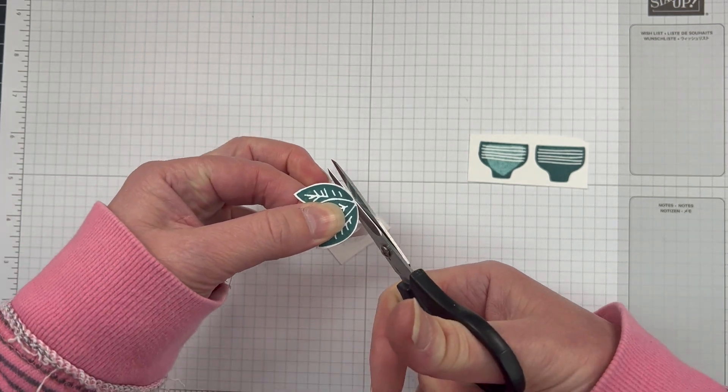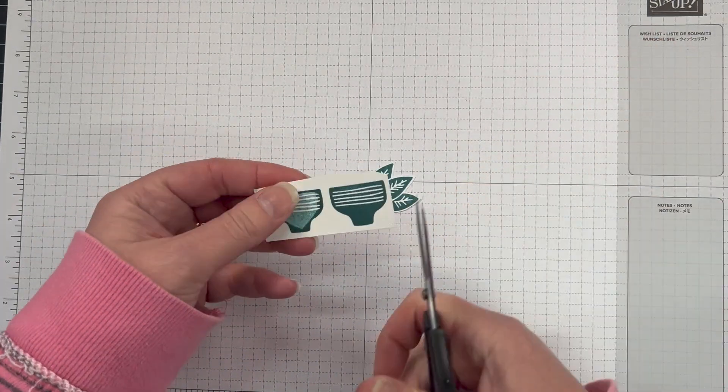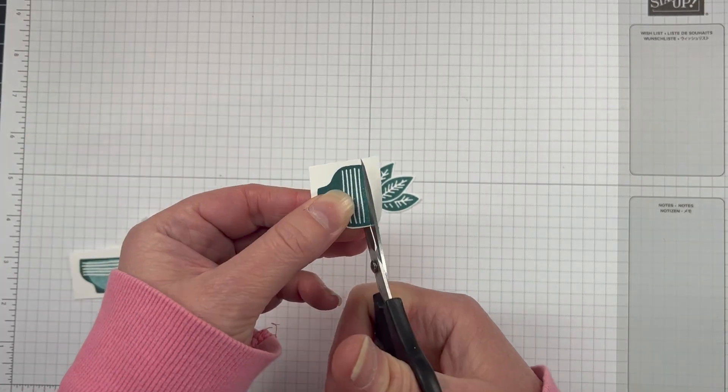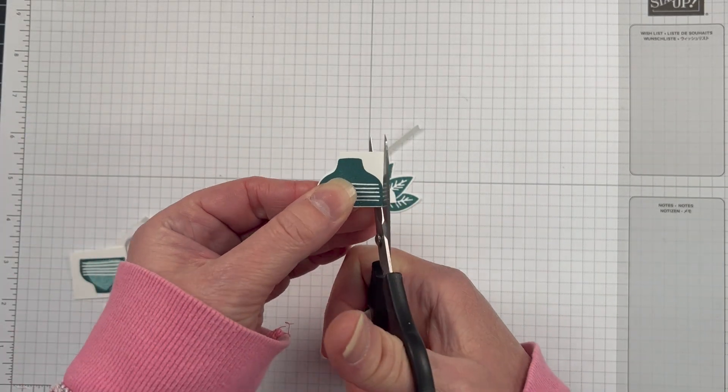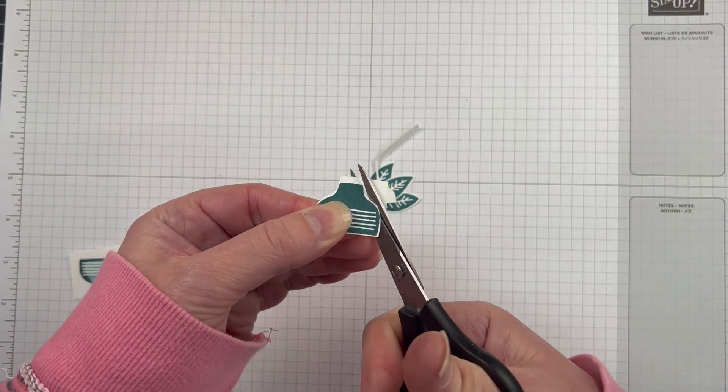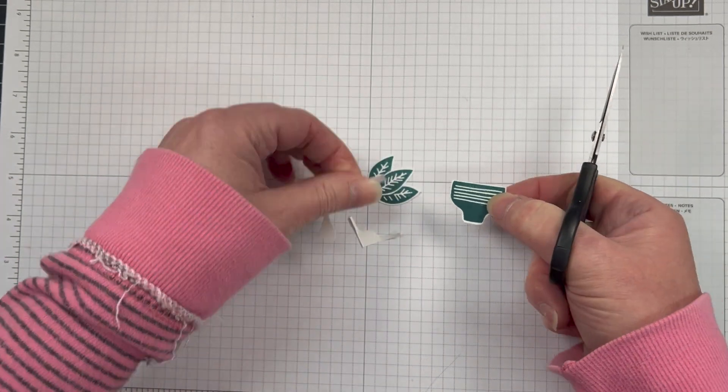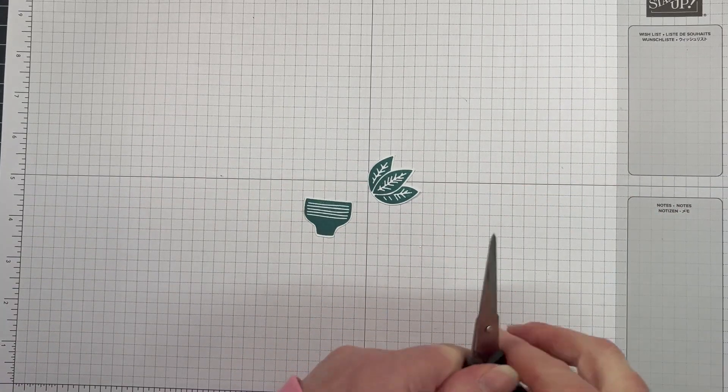And now with this stamp set there is no die, so I'm just going to quickly cut these ones out. Actually, now I say that, is there dies? I don't think there's dies anyway. We're going to fussy cut it out.